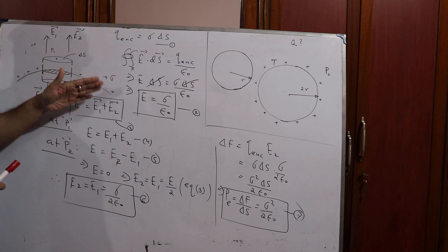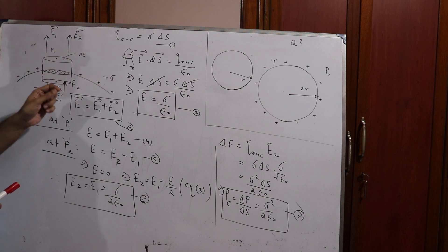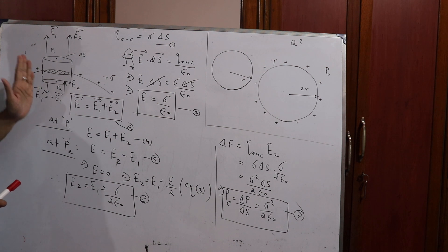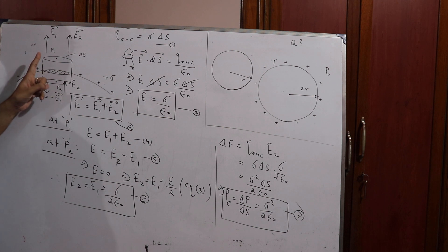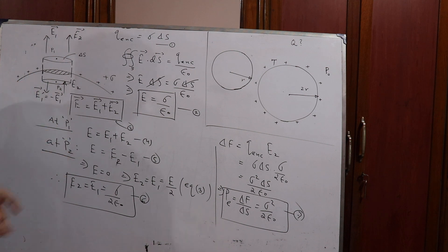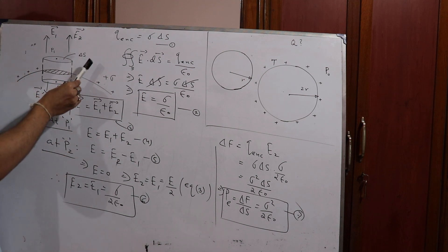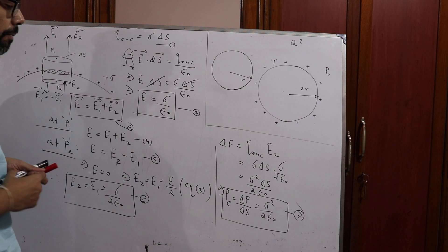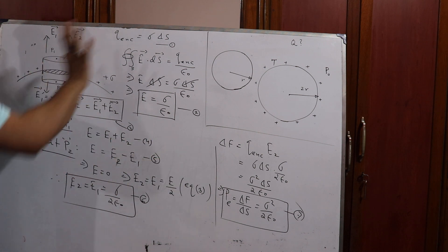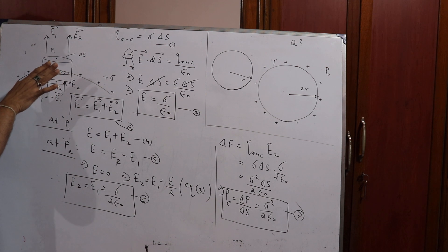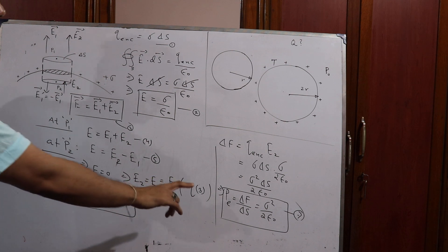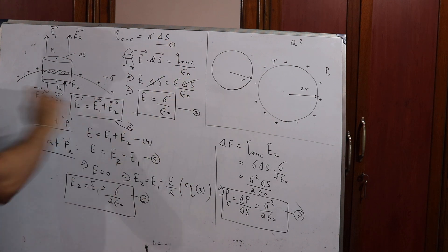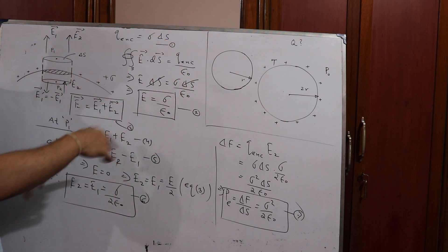This electrostatic pressure acts in the radially outward direction. On a conducting surface, the electric field at every point is perpendicular to the surface at that point — the net field on an equipotential conducting surface is along the normal. So for a sphere, this pressure acts radially outward. This is the background knowledge we need to solve the problem.